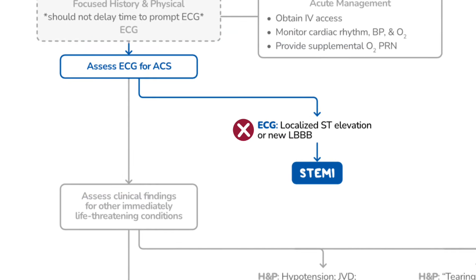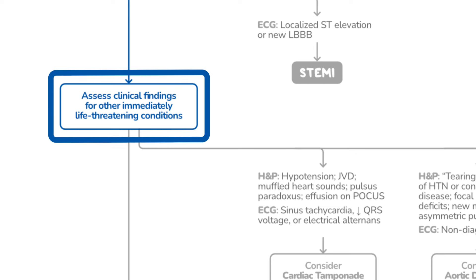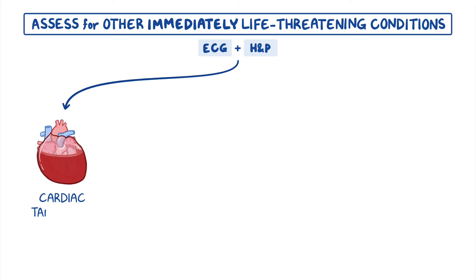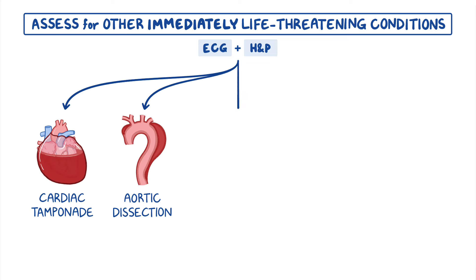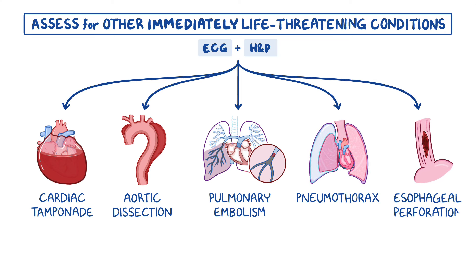If there is no ECG evidence of a STEMI, you need to assess clinical findings for other immediately life-threatening conditions. Remember that the ECG findings could still provide valuable data for a different diagnosis, so use them in combination with a more complete history and physical during your evaluation. These conditions include cardiac tamponade, aortic dissection, pulmonary embolism, pneumothorax, and esophageal perforation.